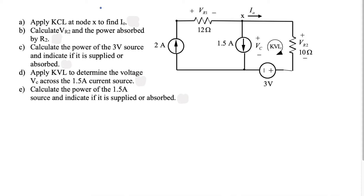All right, what's going on everybody? I'm back today with another video. In today's video we're going to start with some light mesh loop analysis and I'm going to answer these five questions — a, b, c, d, and e — corresponding to the circuit on the right. Let's get right into it and see what we can do to solve these questions.